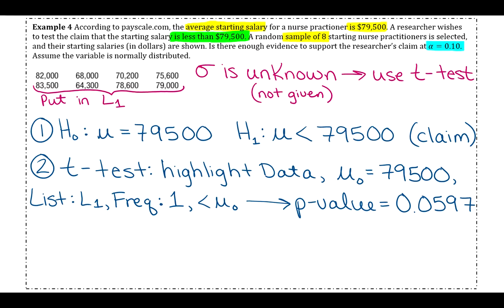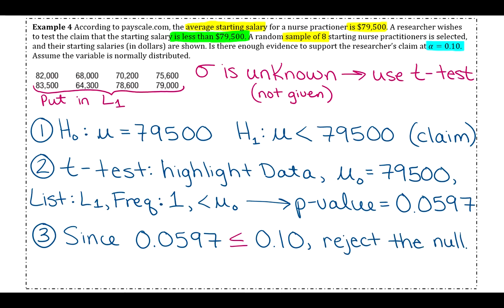And then once you have your p-value, we just have to compare that with our level of significance. So since 0.0597 is less than or equal to 0.1, our decision is that we reject the null.